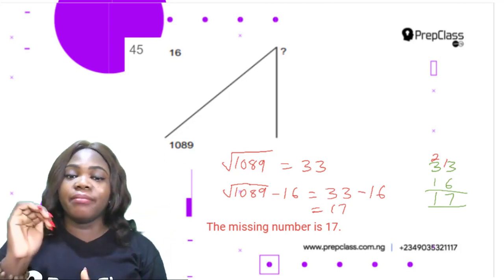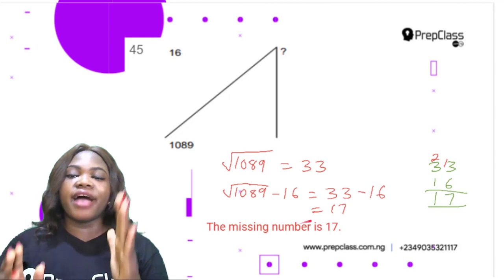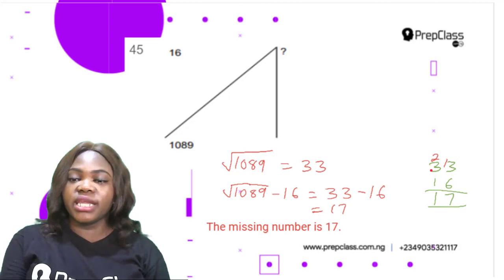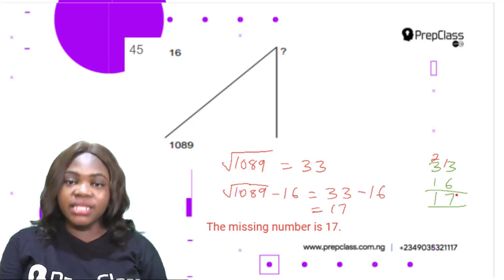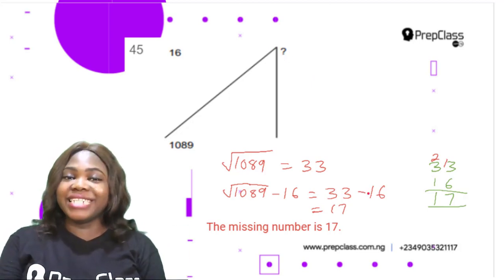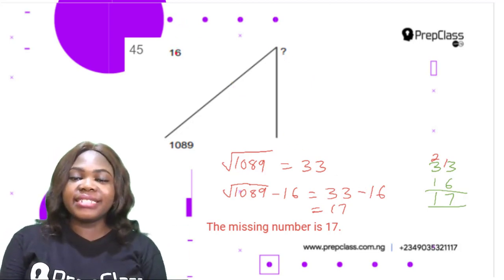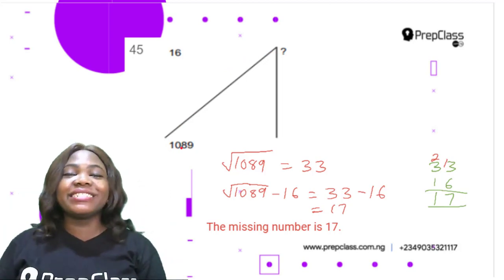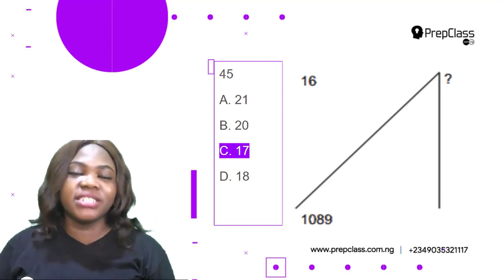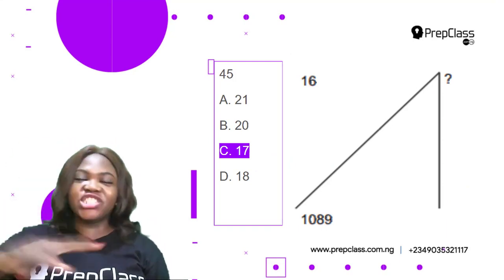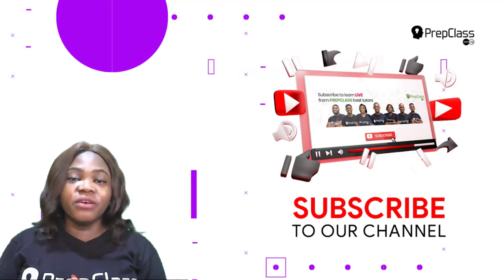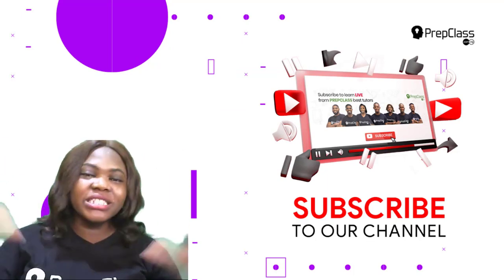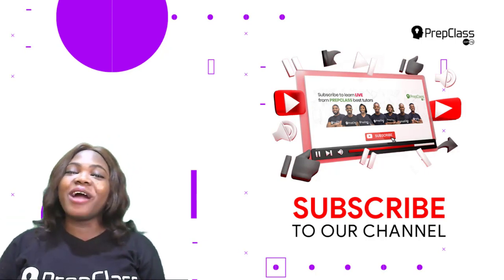Now, √1089 − 16 = 33 − 16 = 17. The missing number is 17. To verify: 16 + 17 = 33, and 33² = 1089 — correct! The correct option is C: 17. I hope you enjoyed this video. Please subscribe to our channel, like and comment to get more videos like this. Bye!